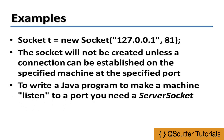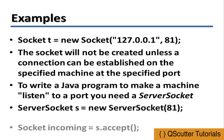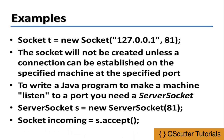To make a machine listen to a port in Java, you need a ServerSocket so that it can manage that port and listen to it. We can create a ServerSocket with: ServerSocket s = new ServerSocket(81), where 81 is the port number being managed. Then, Socket incoming = s.accept() is used to wait and accept the incoming connection from port 81 for further processing.